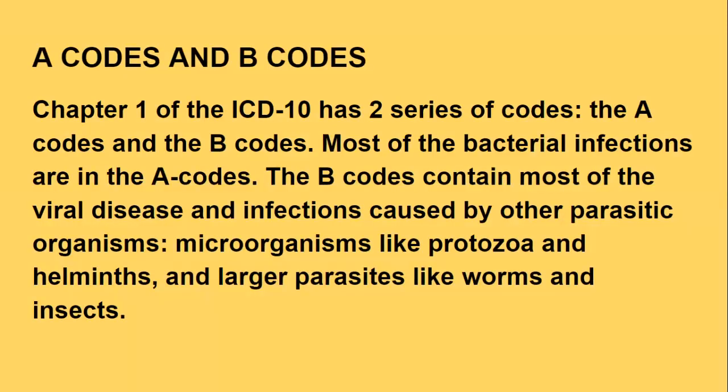Chapter one of the ICD-10 has two series of codes: the A codes and the B codes. Most of the bacterial infections are in the A codes. The B codes contain most of the viral diseases and infections caused by other parasitic organisms — microorganisms like protozoa and helminths, as well as larger parasites like worms and insects.